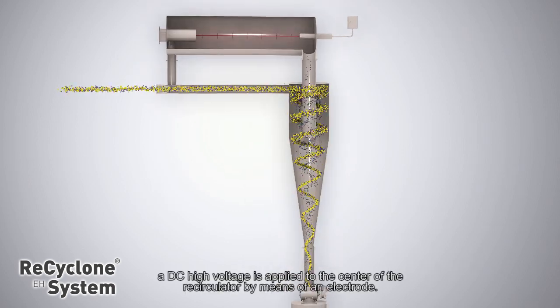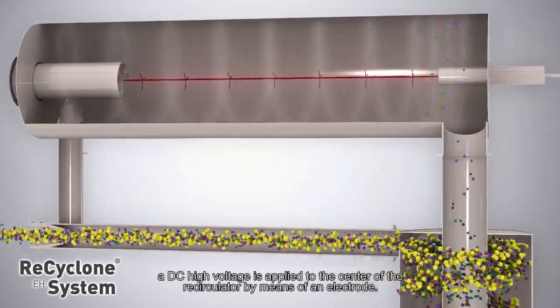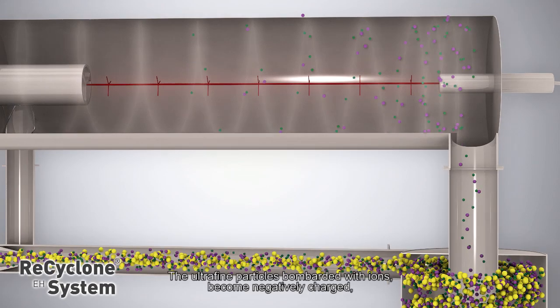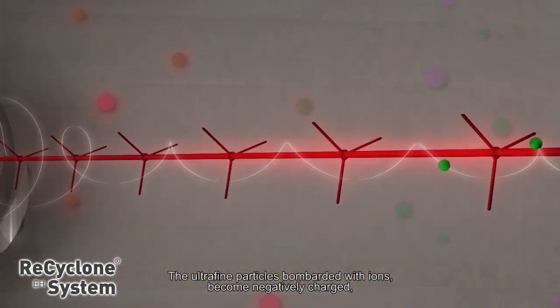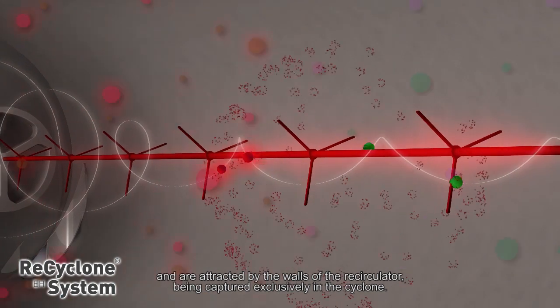A DC high voltage is applied to the centre of the recirculator by means of an electrode. The ultrafine particles bombarded with ions become negatively charged and are attracted by the walls of the recirculator, being captured exclusively in the cyclone.